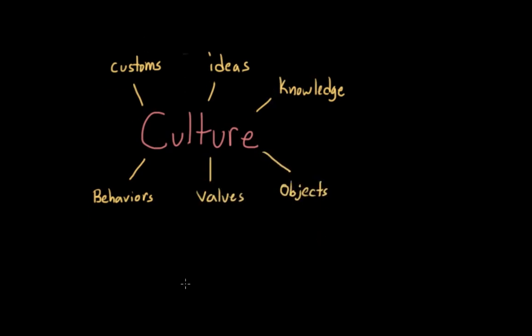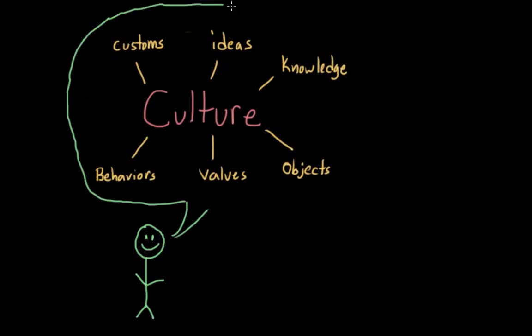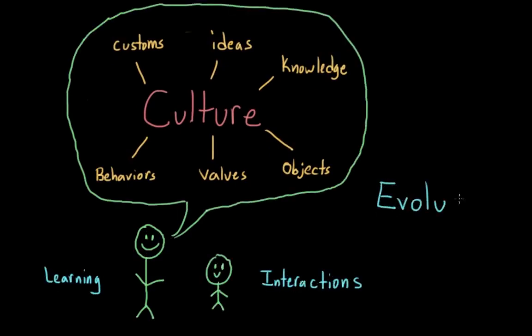When sociologists talk about culture, they are referring to customs, knowledge, and behaviors that are learned and socially transmitted. It includes the ideas, values, and objects that are meaningful to a group of people. Because culture is typically learned through observation and interactions, it might surprise you that there is actually a biological component to culture, and that it has been shaped through evolution.